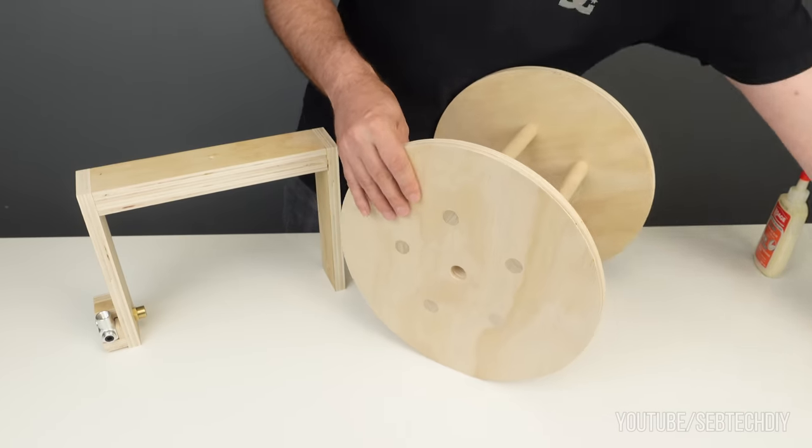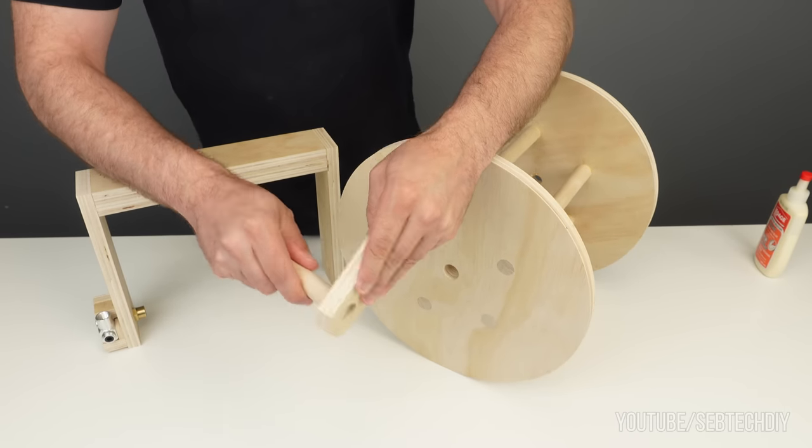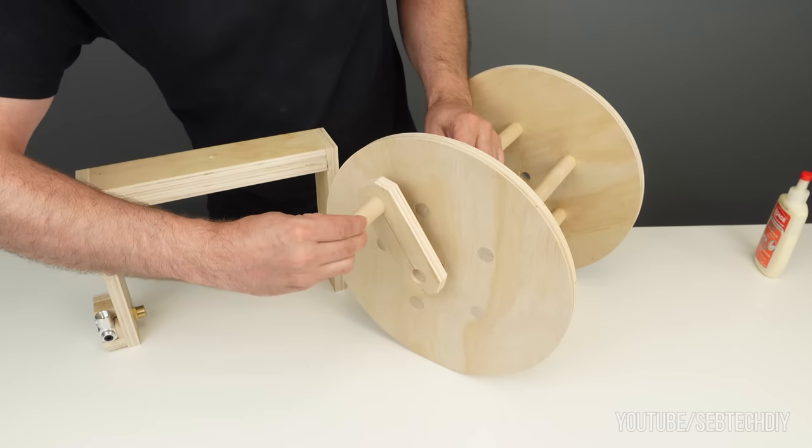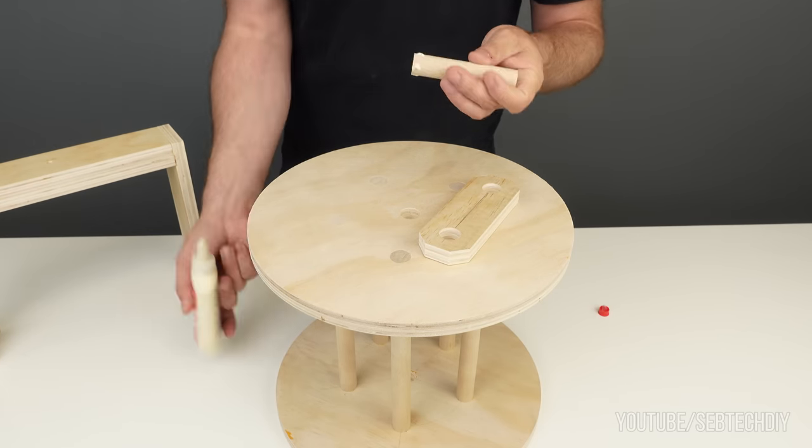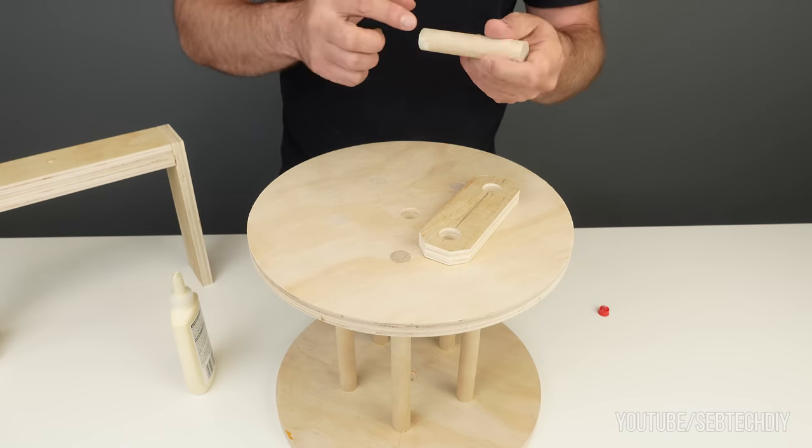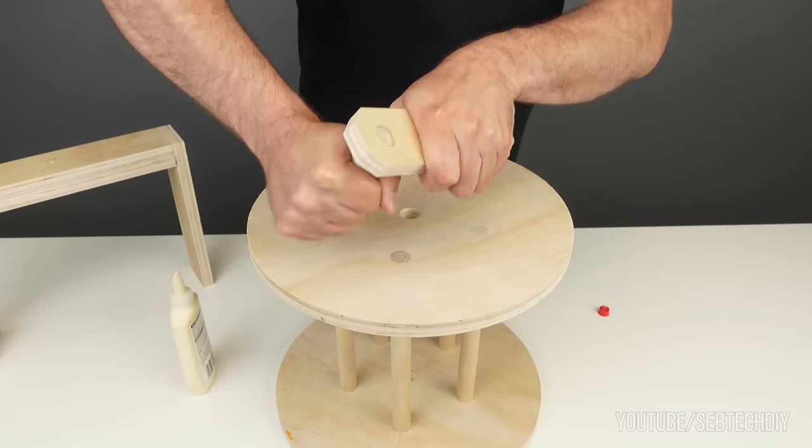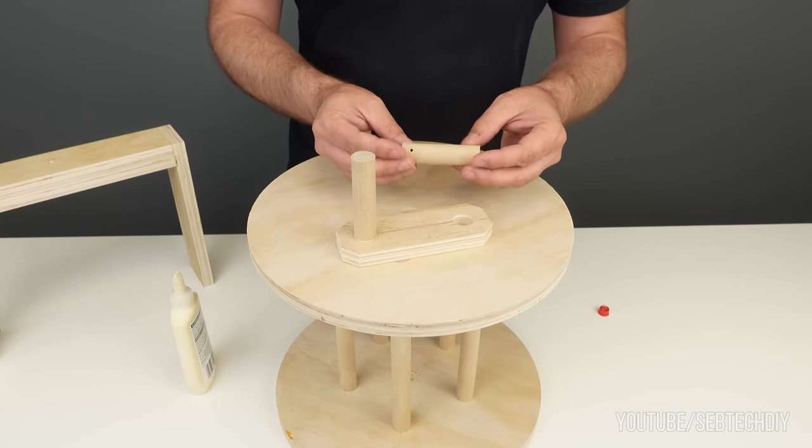The axle is done on one side with the fitting, but for the other side it will be a 3/4 dowel. This dowel will be attached to the handle, so I first start by assembling the handle. The handle is made of a piece of plywood attached to a dowel, pretty simple.